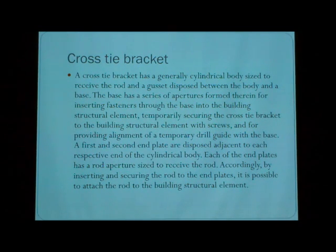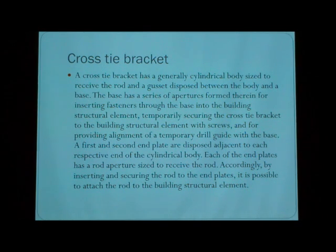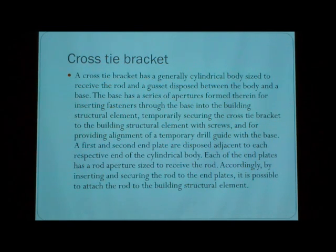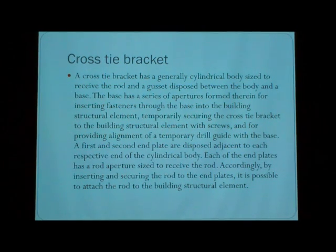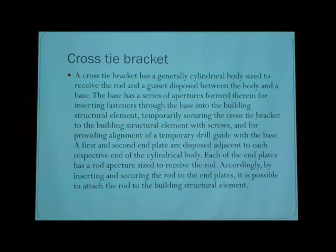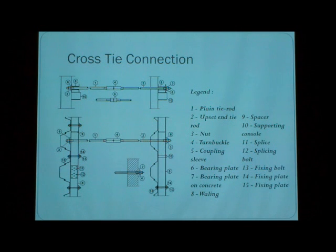Temporarily securing the cross-type bracket to the building structure element with screws, and for providing alignment of a temporary drill guide with the base. The first and second end plates are supposed to adjust to each respective end of the cylindrical body. Each of the end plates has a larger approach size to receive the rod. Accordingly, by inserting and securing the rod to the end plates, it is possible to attach the rod to the building structure element.